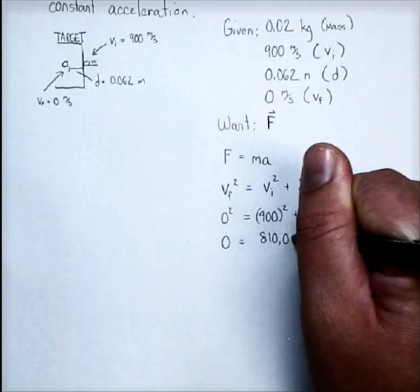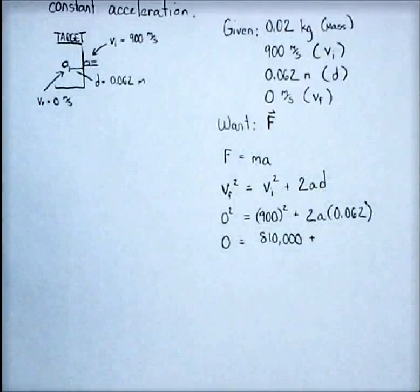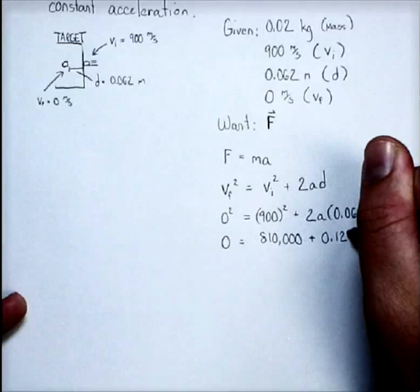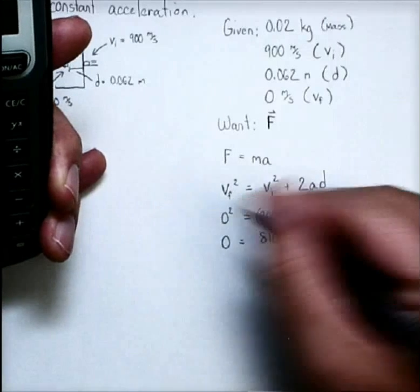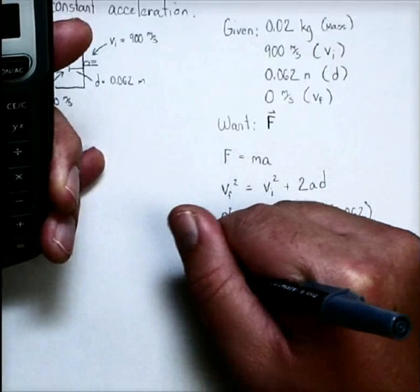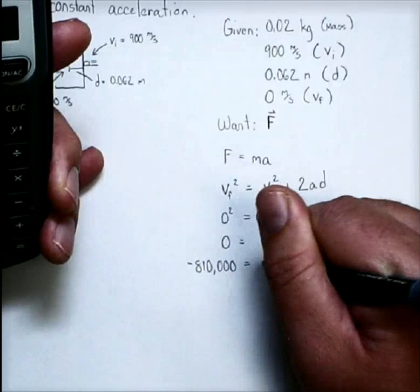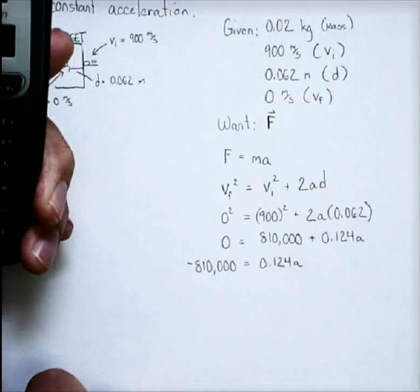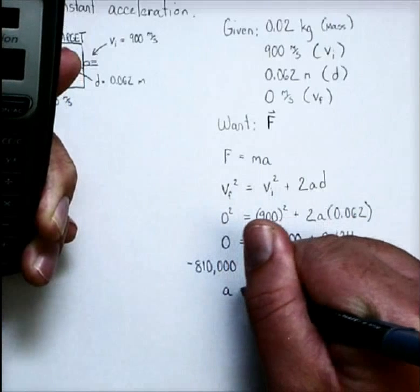And that is, make sure I've got the right number of zeros here, 810,000 plus, or I can go ahead and take two times 0.062, plus 0.124 times the acceleration. And now it's math. But I want you to check something out. When I bring this over, that's negative 810,000. That cannot be ignored. That's there for a reason. Now, if I go ahead and solve this, I find that my acceleration is negative.